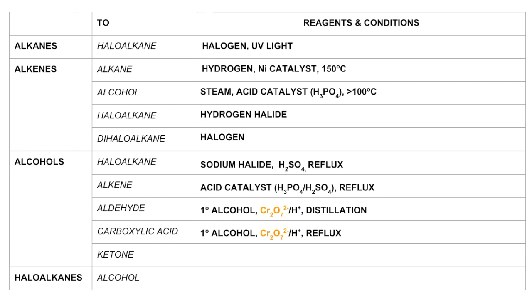For an alcohol to be turned into a ketone, you need to use a secondary alcohol, but it's the same reagent — acidified dichromate ions. The best way to heat it is under reflux, because that ensures all of the alcohol is converted to the ketone.